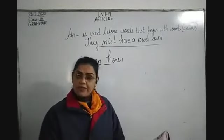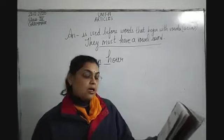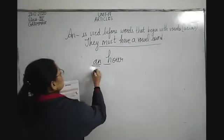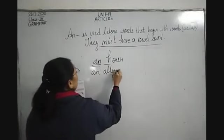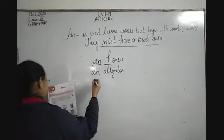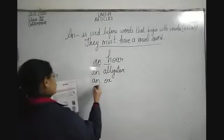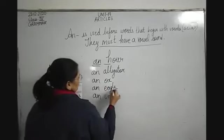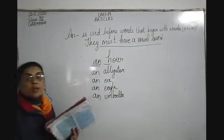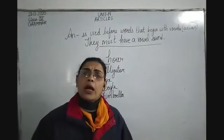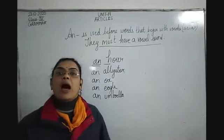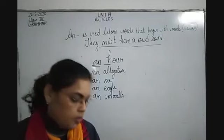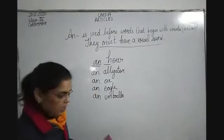On page number 75 you can see the examples: an alligator, an ox, an eagle, an igloo, an umbrella — because they all have a vowel sound. These words also start with a vowel letter and have a vowel sound. Keep in mind that a word may start with a consonant but must have a vowel sound for us to use AN.